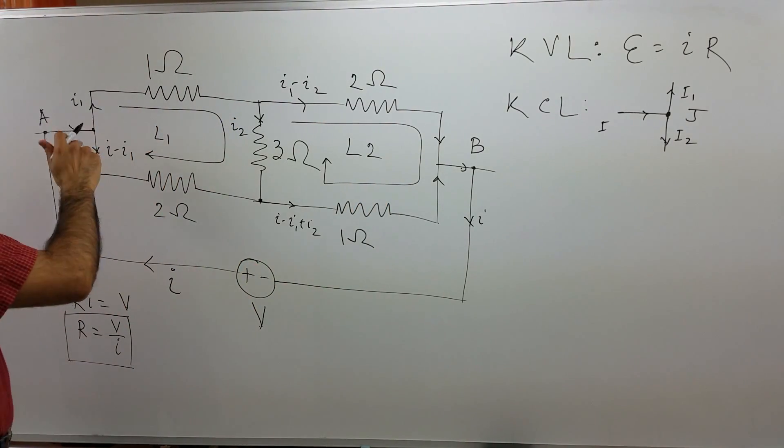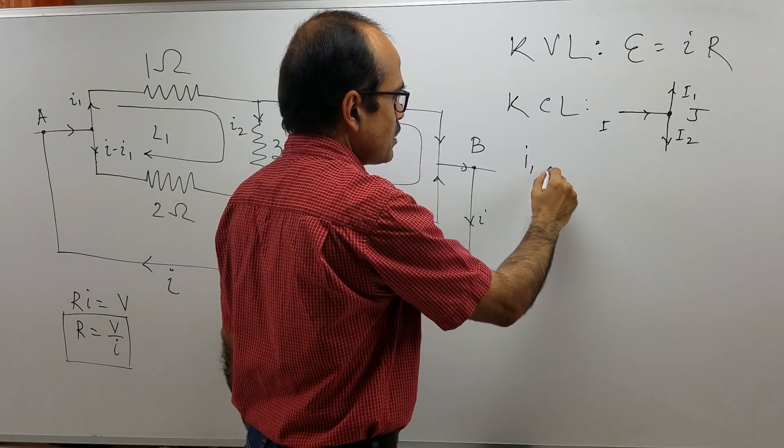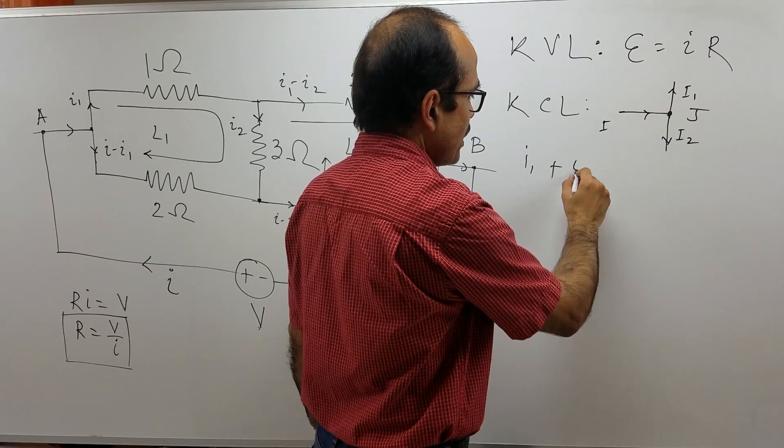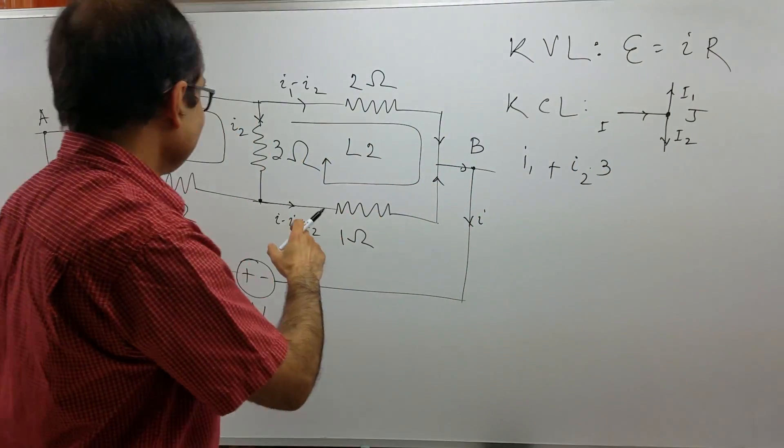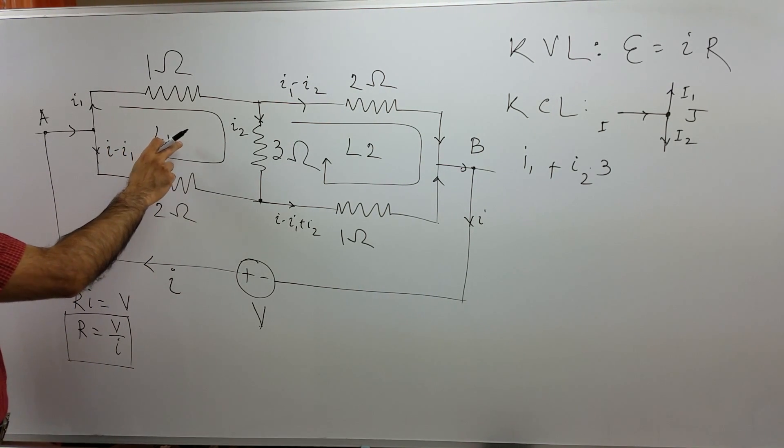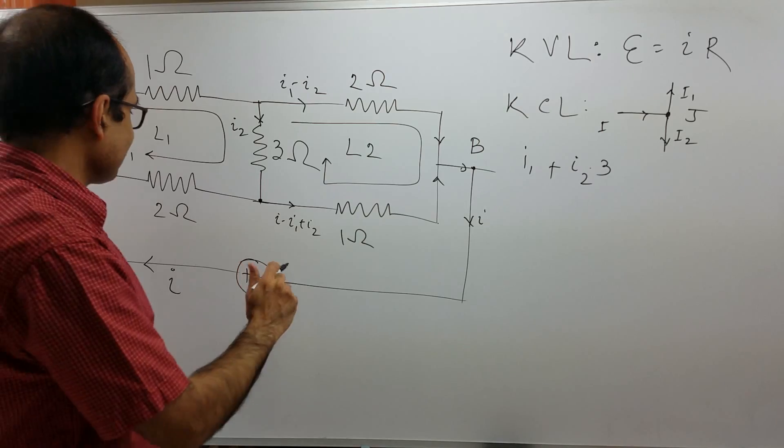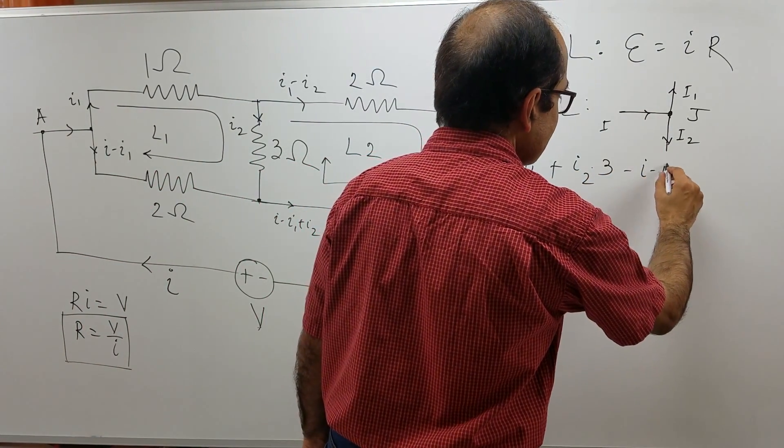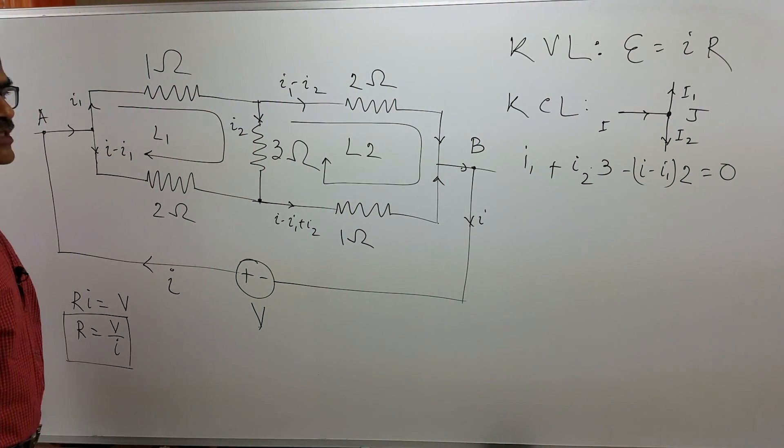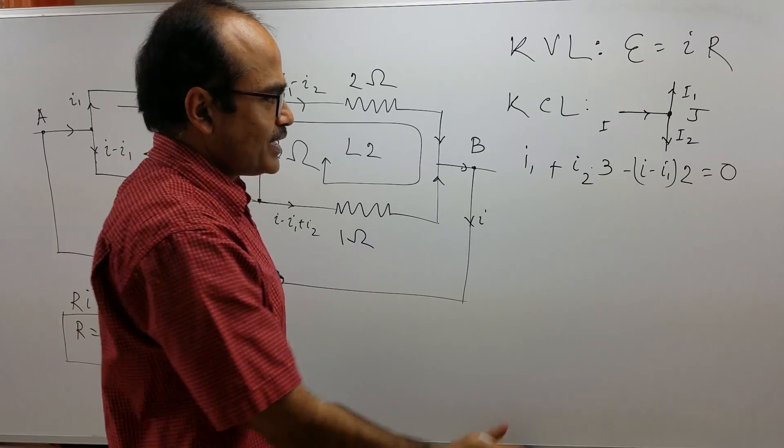Equation of loop 1 is voltage dropped across 1 ohm is I1 times 1. So I1 times 1 plus voltage dropped across 3 ohm that is I2 times 3, I2 times 3 and voltage dropped across 2 ohm. Now here this current is opposite to this positive sense. So I will put a negative sign before I minus I1. So it is minus I minus I1 times 2 is equal to 0 because there is no EMF source in this loop. Sum of all the voltage drops across all the resistors in this loop is equal to 0. That is equation number 1.